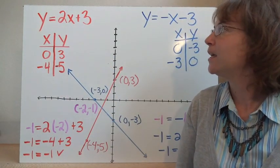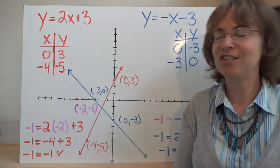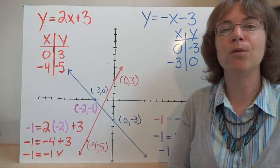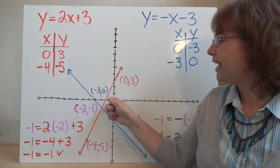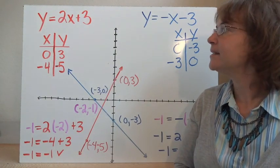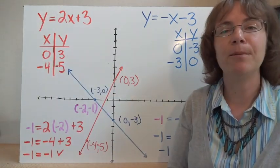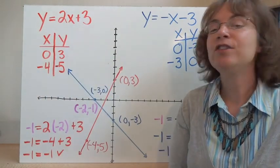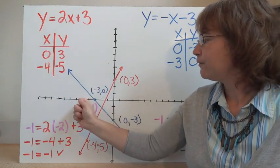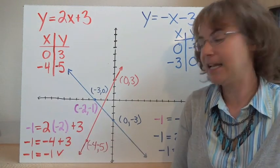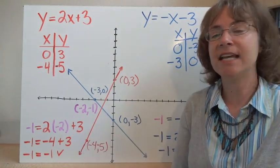If we have the line y equals 2x plus 3, we can graph it using two coordinate points. I'll choose x equals 0: 2 times 0 is 0, plus 3 gives y equals 3, so the point is (0, 3). Then I'll choose x equals negative 4: 2 times negative 4 is negative 8, and negative 8 plus 3 is negative 5, giving the point (negative 4, negative 5). I can take a straight edge and connect those points to get my line.